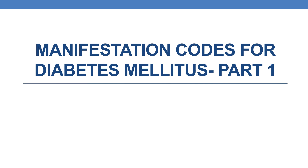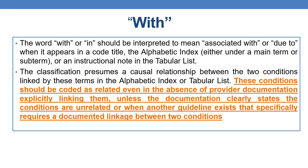Hello everyone. Let us discuss manifestation codes for diabetes mellitus part 1. Before going into the codes, let us discuss the convention 'with'. 'With' is a type of convention which we will find in the first chapter. The word 'with' or 'in' should be interpreted to mean associated with or due to.